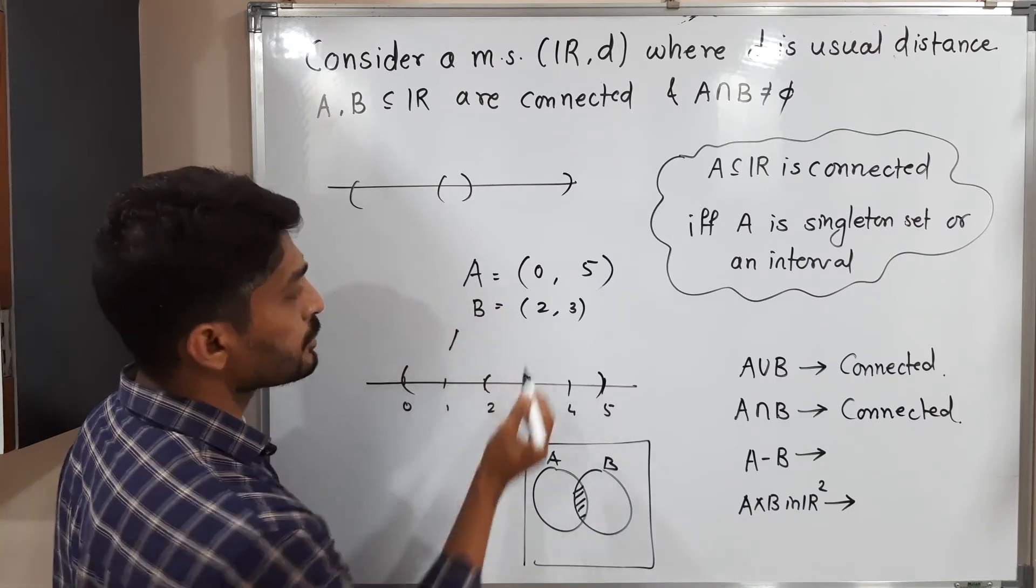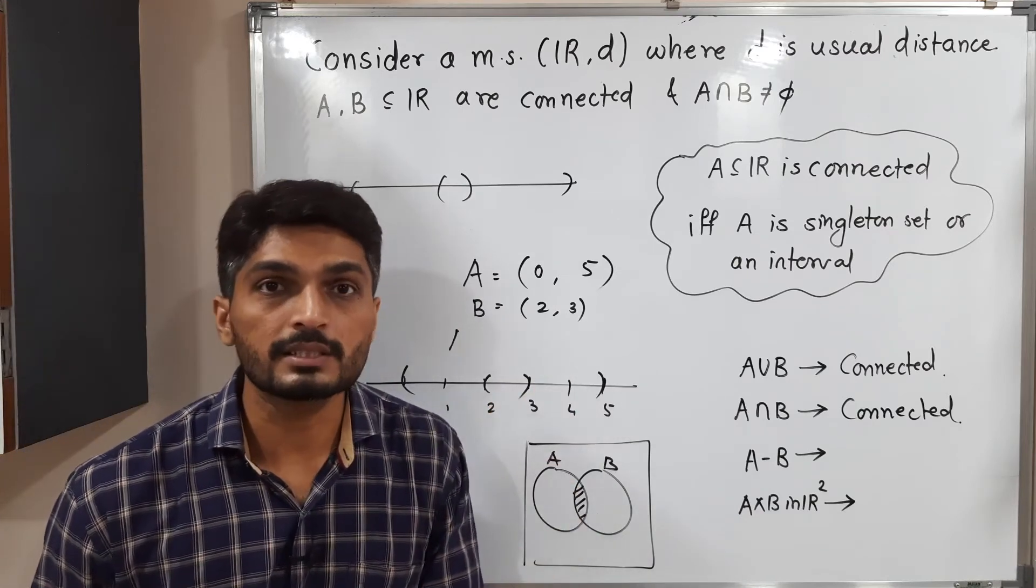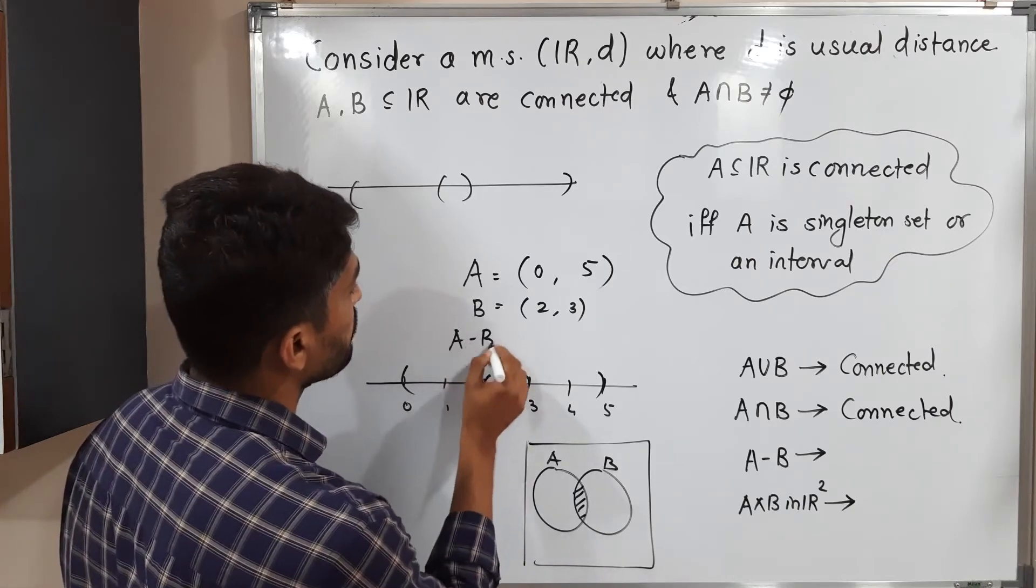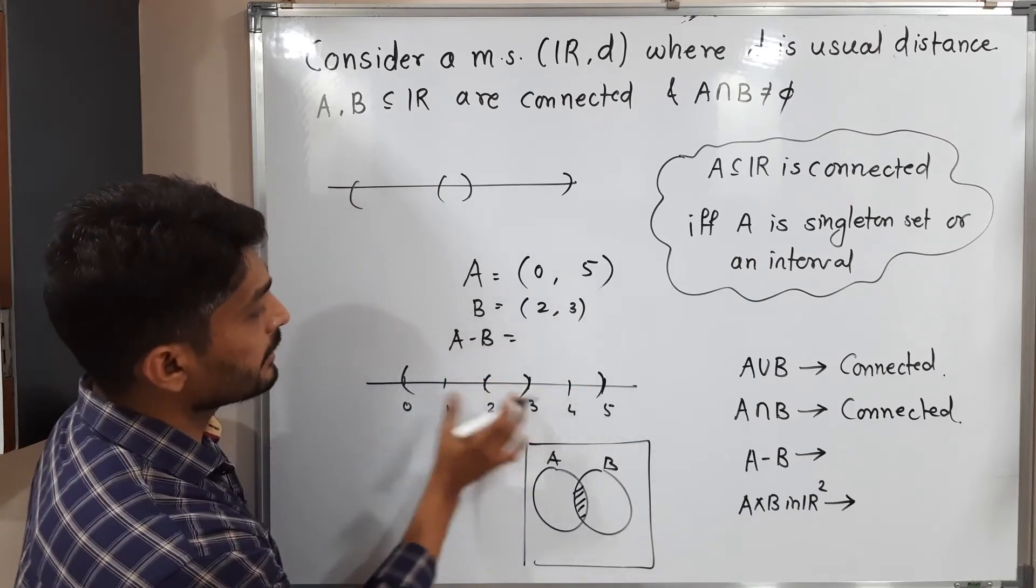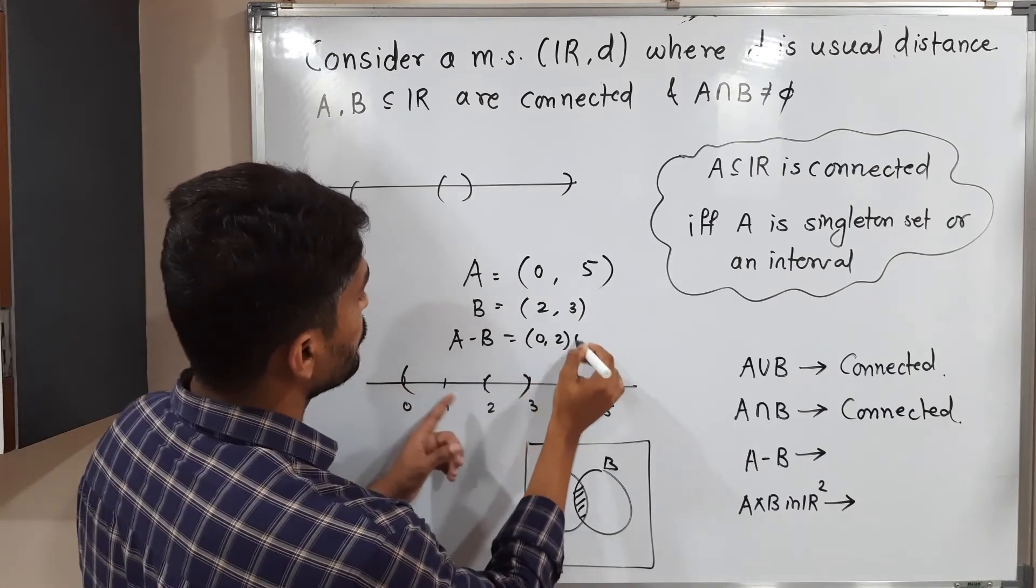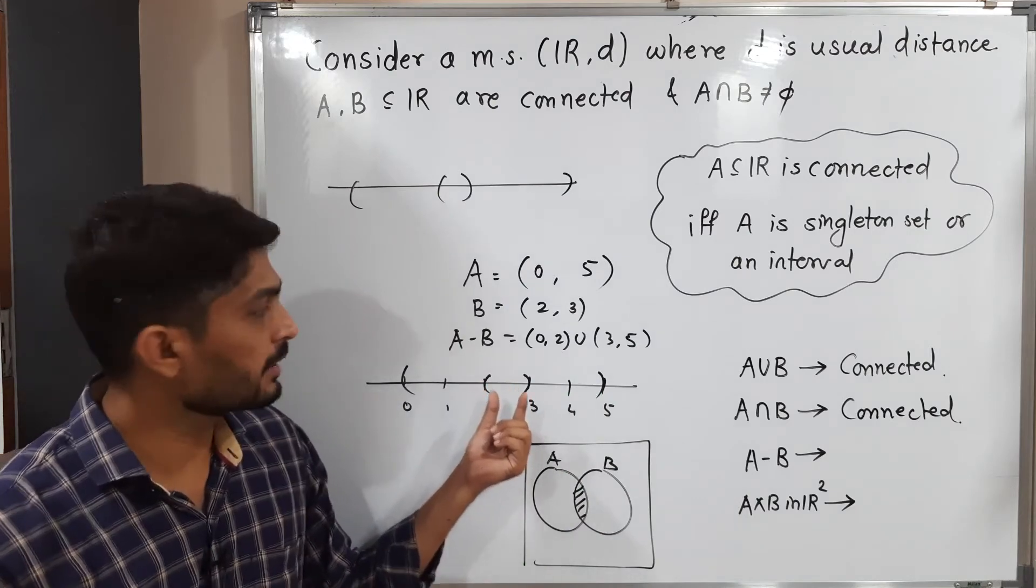So both are connected. Intersection is also non-empty. So what is intersection? B obviously since B is a subset of A. Let us find A minus B. We are subtracting this interval from this large interval. So what will we have? (0,2) union (3,5). This part is removed. We have subtracted this part.